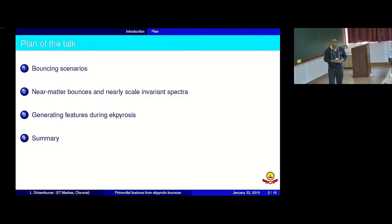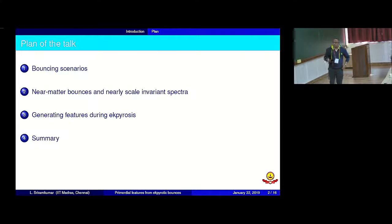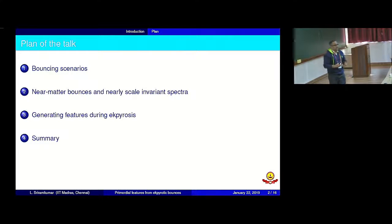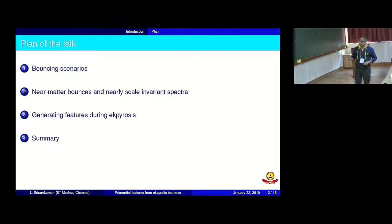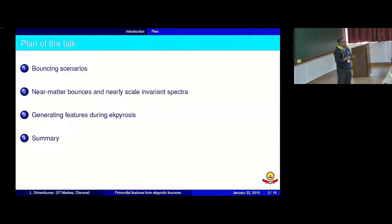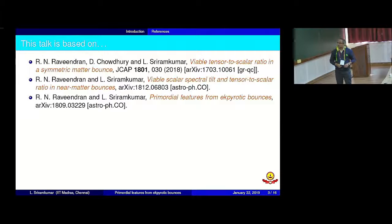I will begin with a brief introduction to bouncing scenarios, then talk about what are known as near-matter bounces. It is easy to generate nearly scale-invariant spectra in bouncing scenarios — it's just that, as I mentioned, these models will not be attractors. I will talk about one such model, how you can generate nearly scale-invariant spectra, and then I will introduce the idea of ecpyrosis and discuss generating features in ecpyrosis — features that have been considered often in the context of inflation. This talk is based on three pieces of work: one has been published and two are available as preprints.